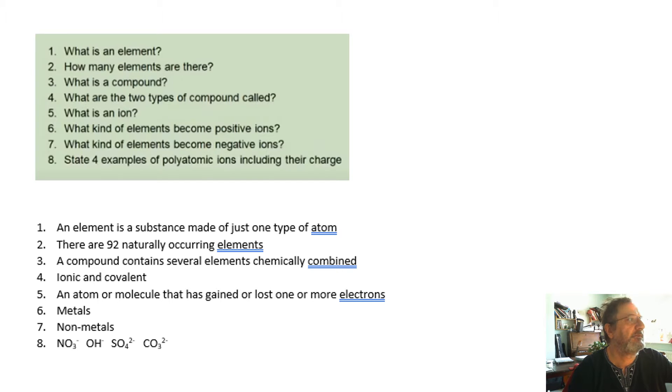So what is an element? It's a substance made of just one type of atom. There are 92 naturally occurring elements. A compound contains several elements chemically combined. There has to have been a chemical reaction. If there wasn't, then it's just a mixture.